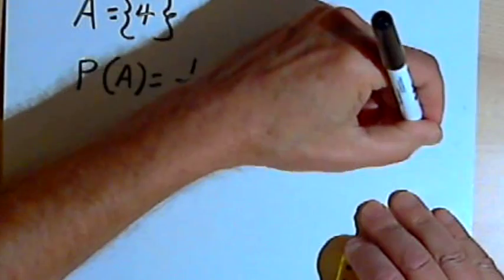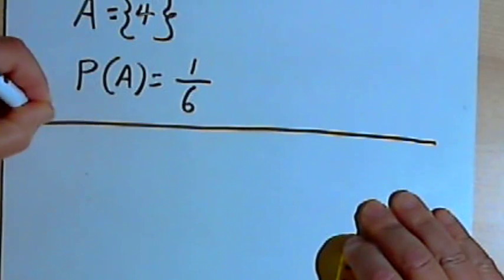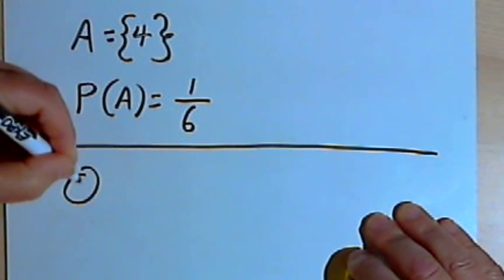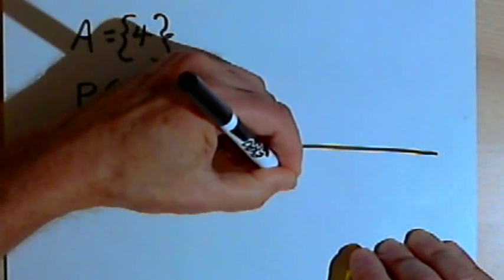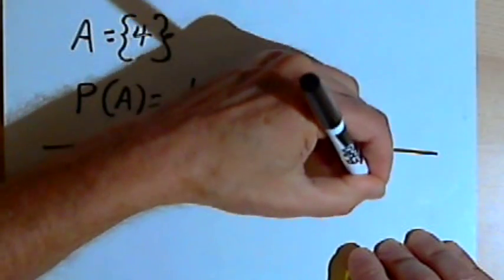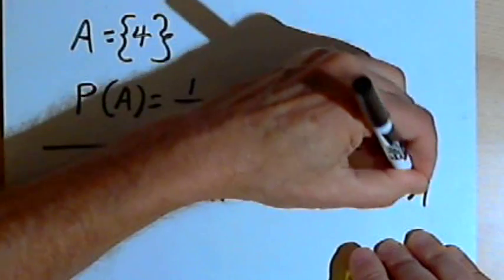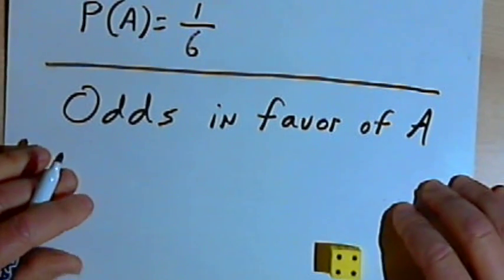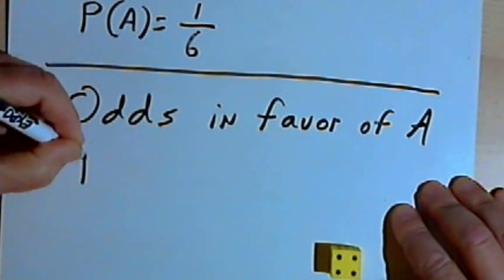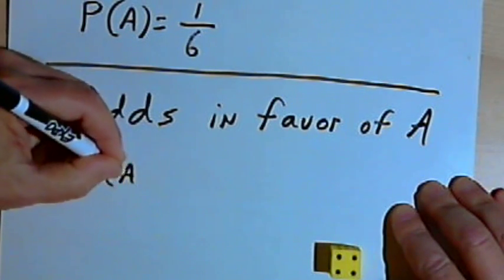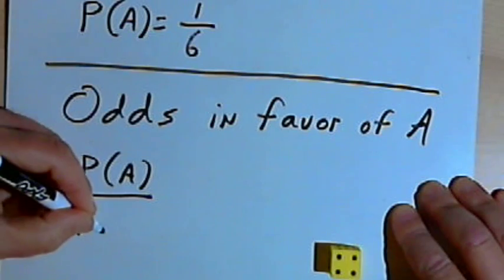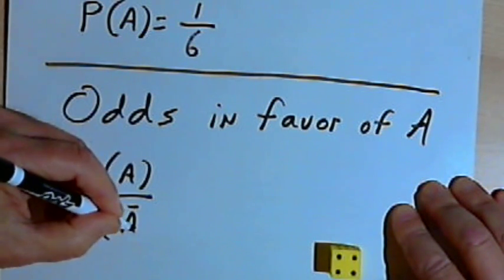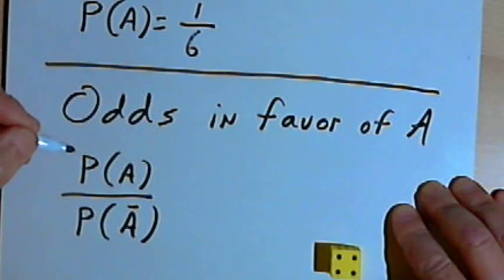Now when we talk about odds, this is going to be something different. So if I want to talk about the odds in favor of A, I'm going to use this formula. It's going to be the probability of A divided by the probability of A not happening, the probability of the complement of A.